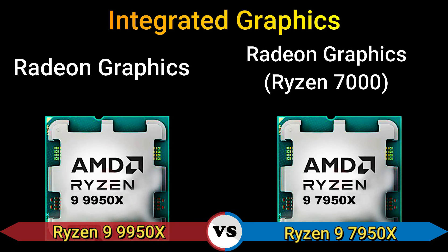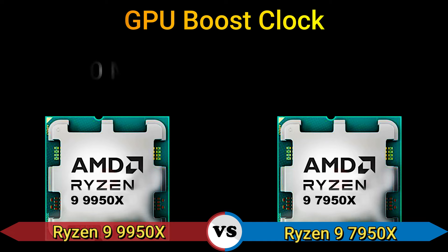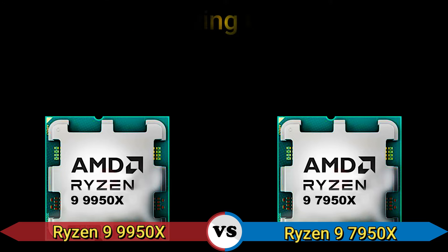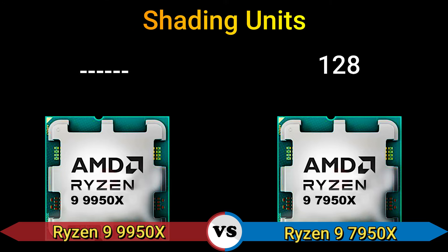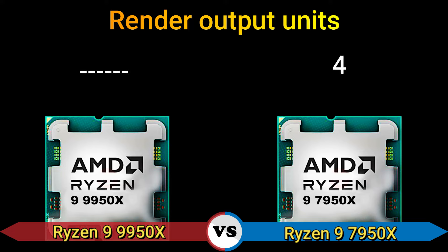Part 3: iGPU. Integrated graphics: Radeon Graphics and Radeon Graphics Ryzen 7000. CPU base clock: 400 MHz. CPU boost clock: 2200 MHz. Shading units: 128. Texture mapping units: 8. Render output units: 4.